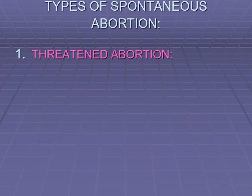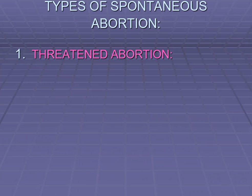The first type is threatened abortion. This is the only type in which the continuation of pregnancy is possible. It is a clinical entity where the process of abortion has started, but it has not progressed to a stage from which recovery is impossible. So recovery can be possible in threatened abortion.